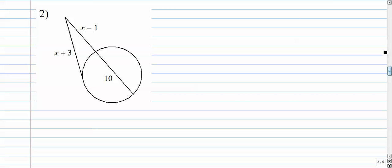Number two. When I see these problems, I immediately look for my tangent. The tangent is the segment that is off here, and it's intersecting the circle at one point. So we're going to square that thing. When I square that thing, I have to put it in parentheses because it's a binomial. Set that equal to the segment that's closest to the point of intersection times the whole thing. The whole thing is x minus 1 plus 10.